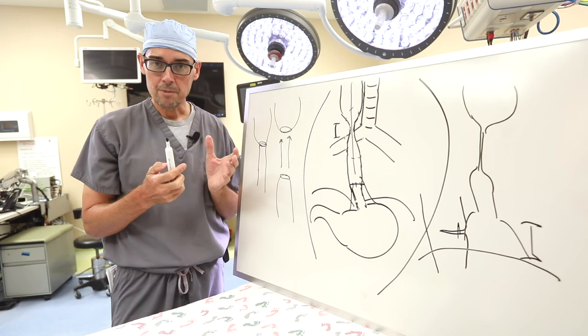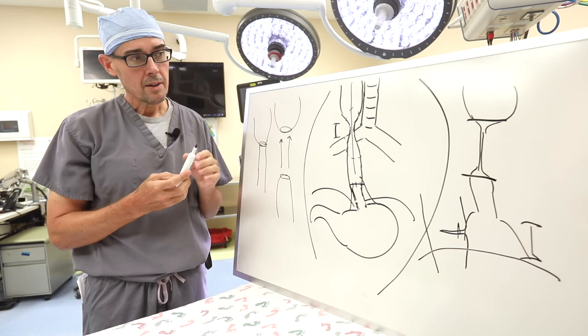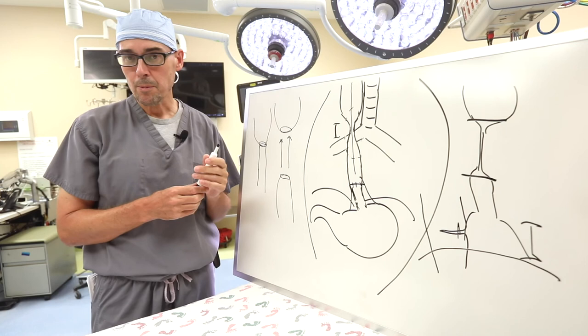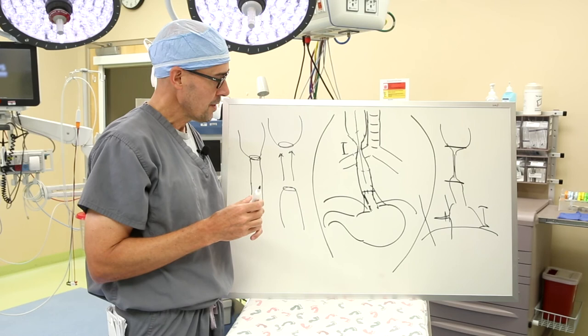And then sometimes you frankly have to make a decision that certain strictures are better to reoperate on and to go back and sort of cut out the stricture and to redo the connection. And for that, you have to think about where the stomach is. And this would be an area of basically reoperative esophageal surgery or reoperative esophageal atresia surgery.